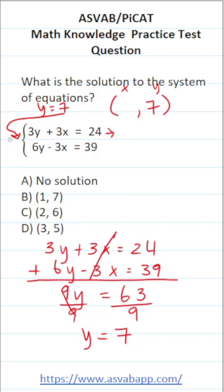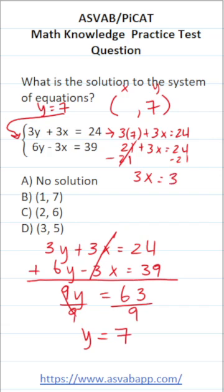Let's do it with this first equation. This becomes 3 times 7 is 21, plus 3x equals 24. Subtract 21 from both sides of the equation. This crosses out, leaving us with 3x over here. 24 minus 21 is 3.